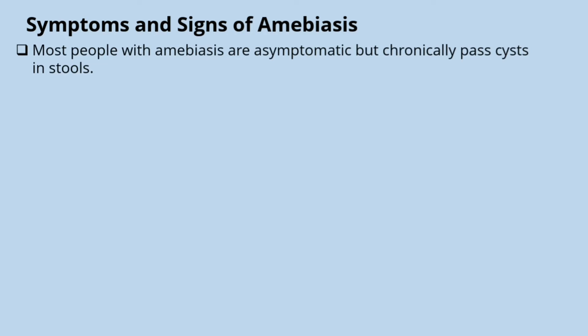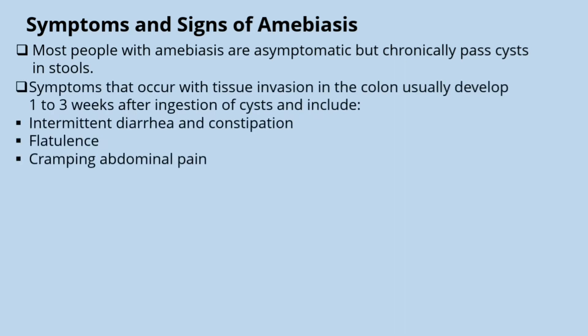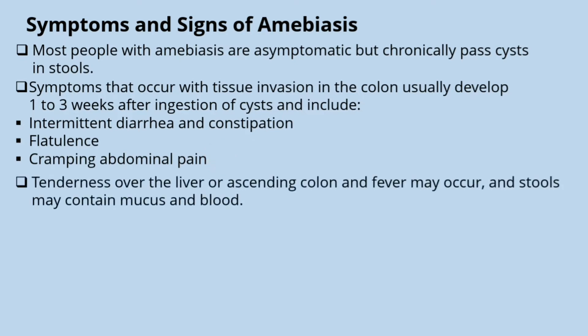Regarding signs and symptoms of amoebiasis: most people with amoebiasis are asymptomatic but chronically pass cysts in stools, making them infective. Symptoms that occur with tissue invasion in the colon usually develop one to three weeks after ingestion of cysts and include intermittent diarrhea and constipation, flatulence, cramping abdominal pain, tenderness over the liver or ascending colon, and fever. Stools may contain mucus and blood.